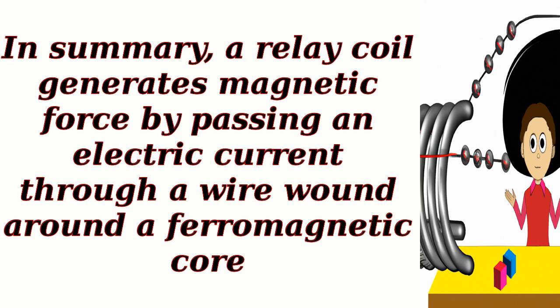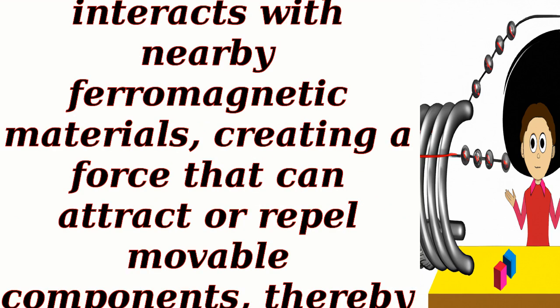In summary, a relay coil generates magnetic force by passing an electric current through a wire wound around a ferromagnetic core. The resulting magnetic field interacts with nearby ferromagnetic materials, creating a force that can attract or repel movable components, thereby enabling control and switching operations.